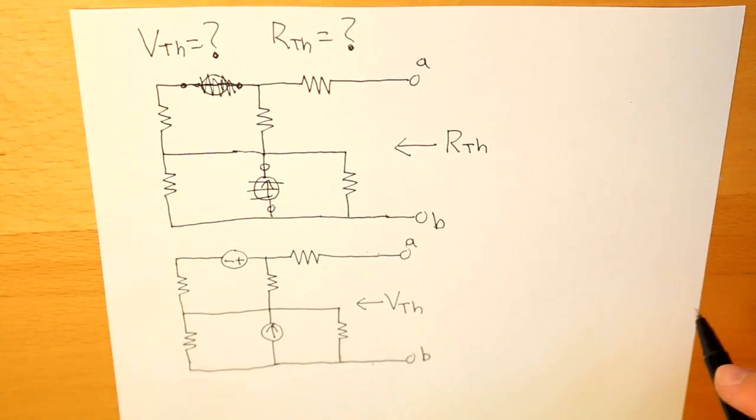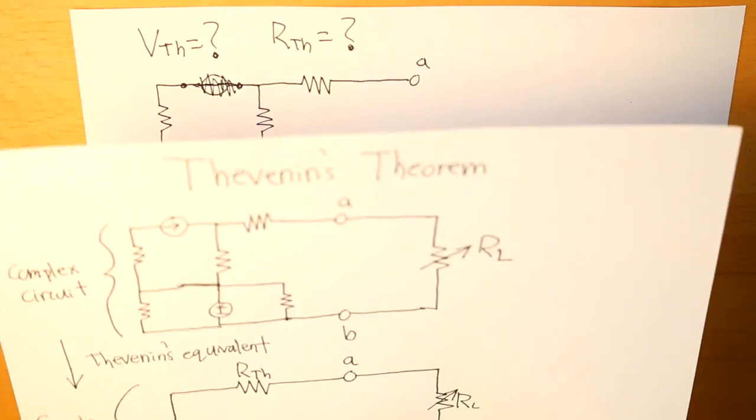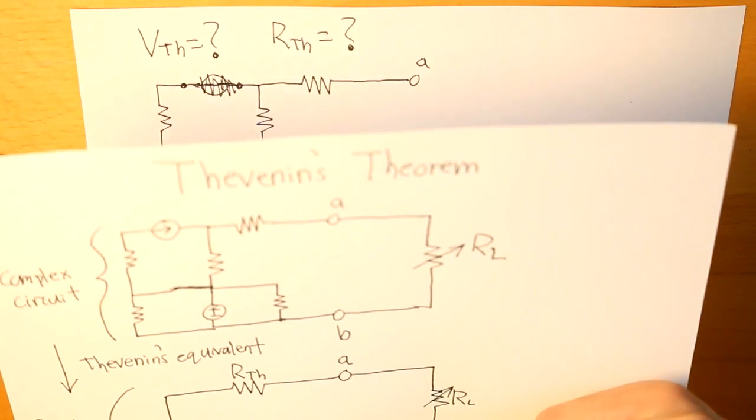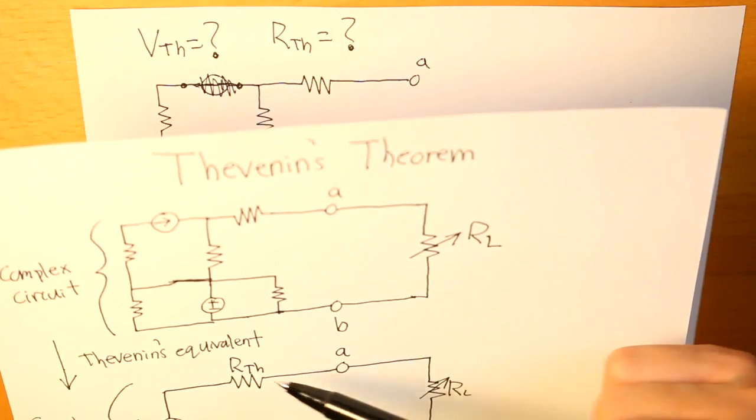And that is the basis of how to apply Thevenin's theorem to find an equivalent circuit with just a voltage source in series with a resistor.